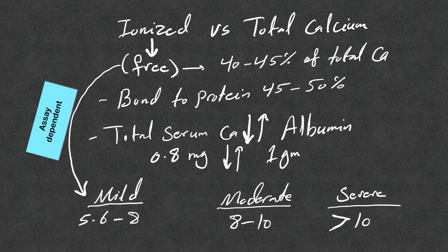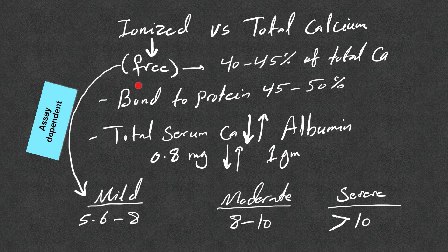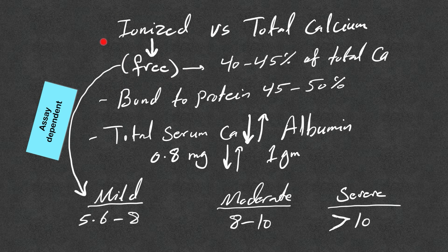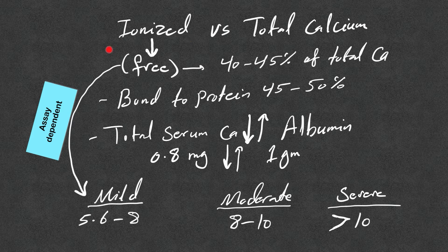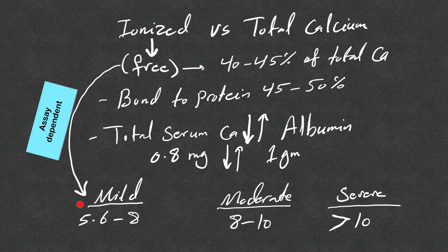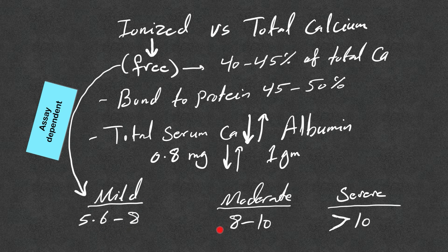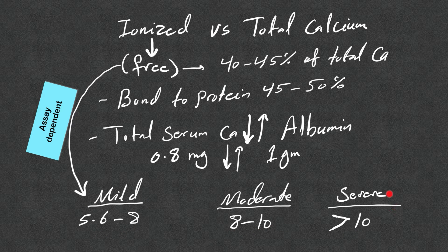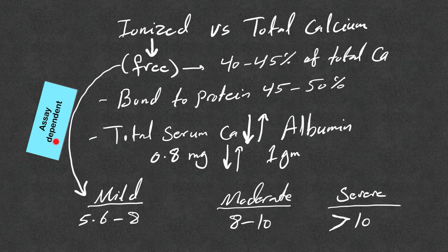There are different formulas you can use, or you can rely on the free or ionized calcium if your facility does this test. If we're going to use the ionized or free calcium to decide the severity: 5.6 to 8 is mild, 8 to 10 is moderate, and above 10 is severe. This is assay dependent.